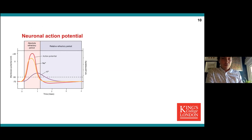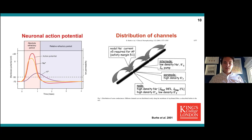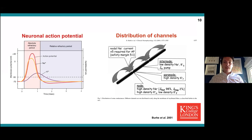In any introduction to a motor unit discussion, we have to touch upon the physiology. The action potential results from a combination of opening and closing of the sodium and potassium channels. It gets more complicated, as saltatory conduction as the impulse travels down the axon means there are different densities and types of these channels within the node, the paranode, and the internode. We have to be mindful of this when interpreting excitability data.